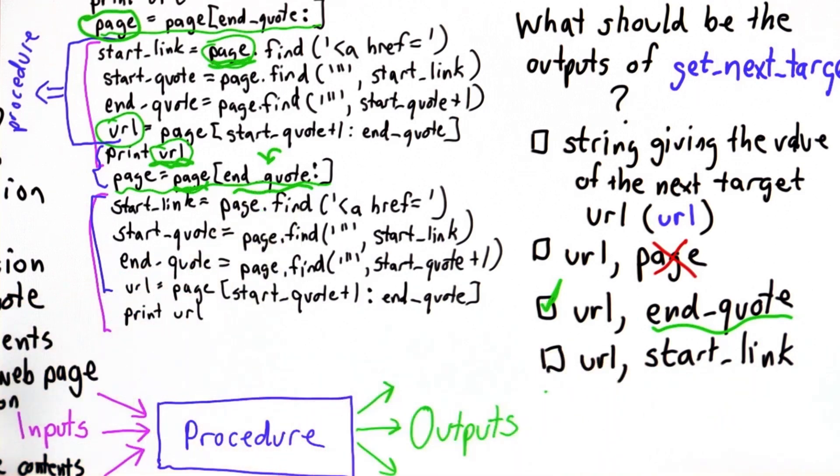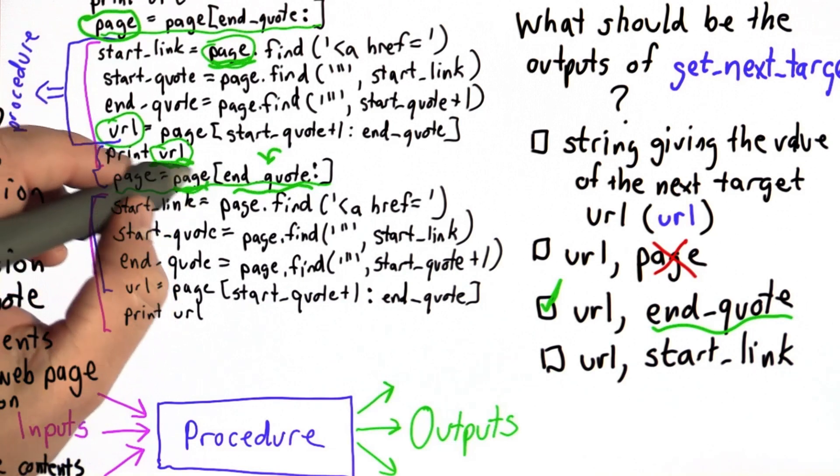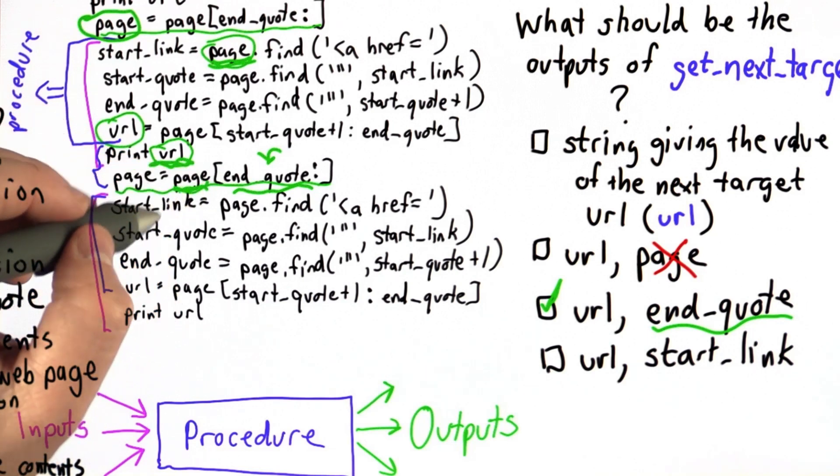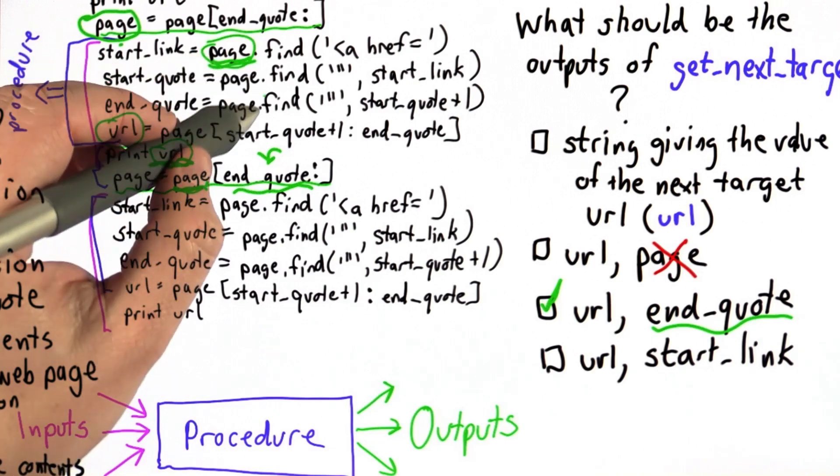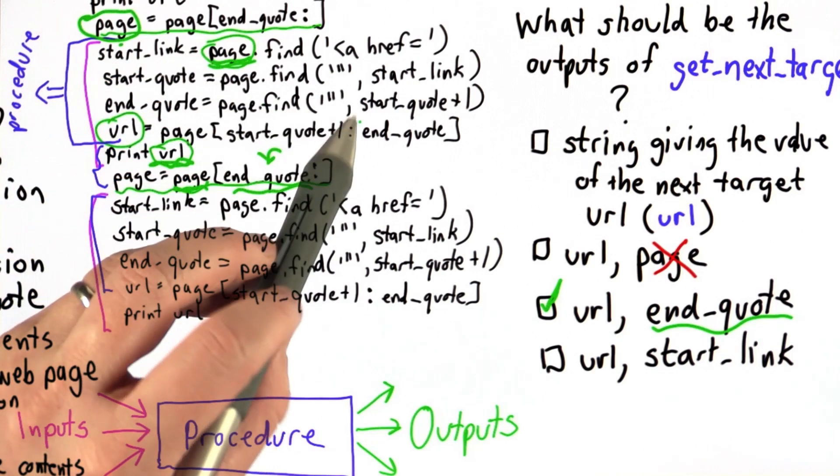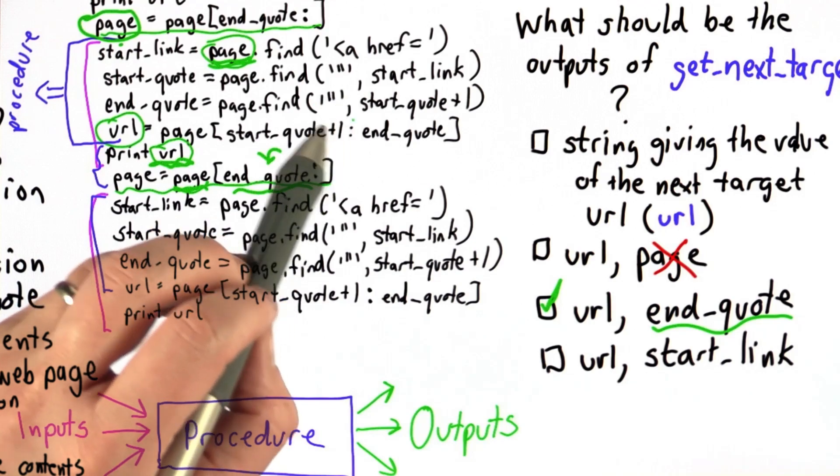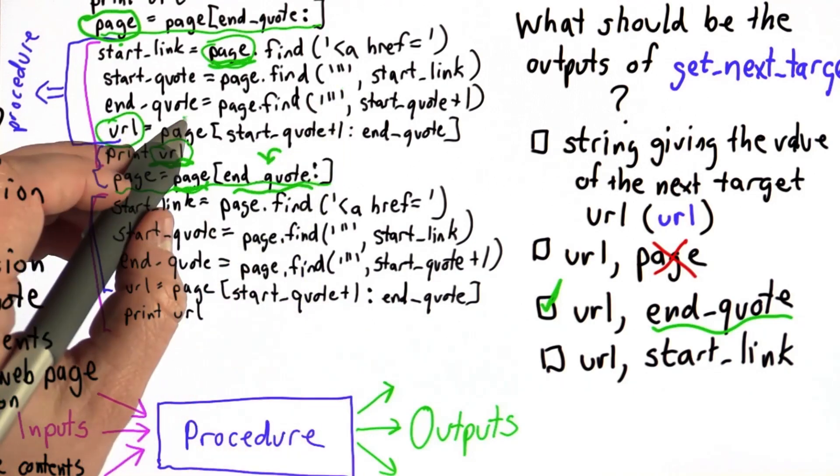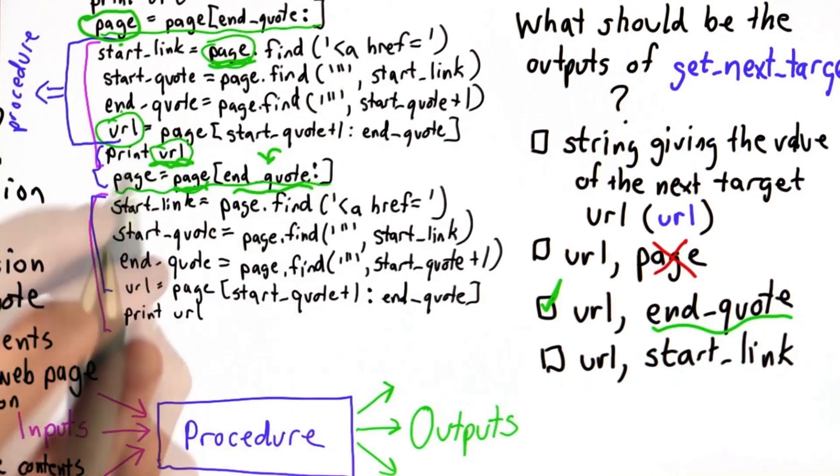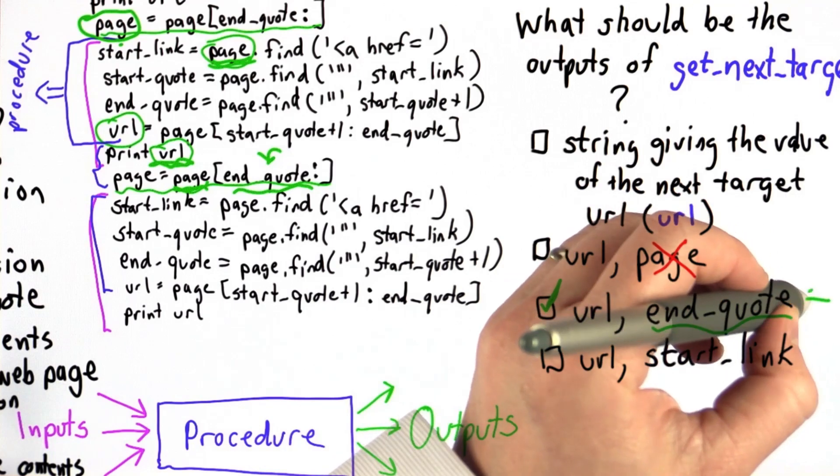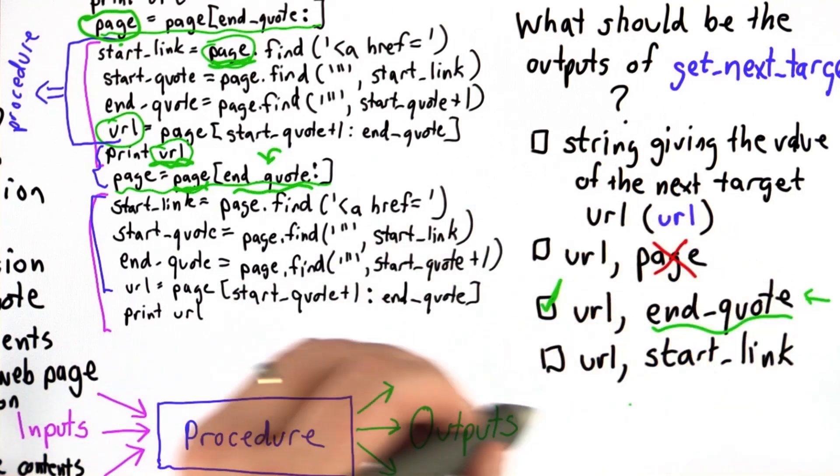The fourth possibility could work. So if we return both the URL and the value of start link, well, we could figure out a way to advance the page to not find the same quote, but we'd basically have to redo all this code. We need to look for the next quote starting from start link. We need to look for the closing quote for that. Basically we need to compute the value of end quote again. So it's a lot more useful to return the value of end quote than to return the value of start link.